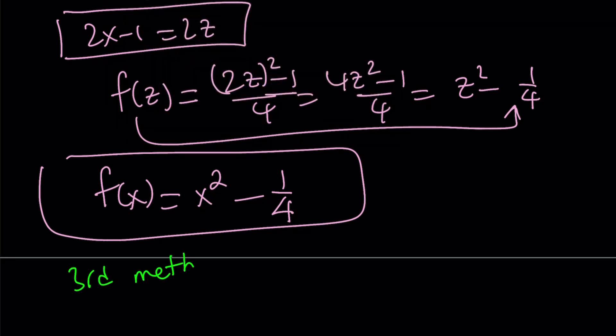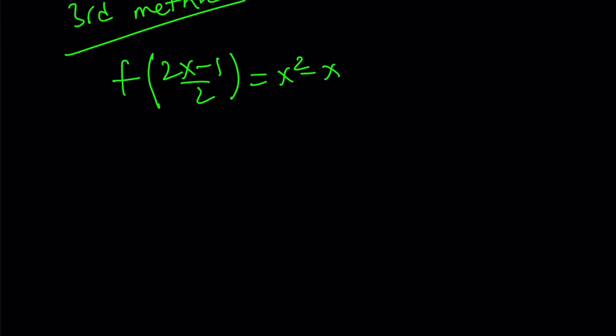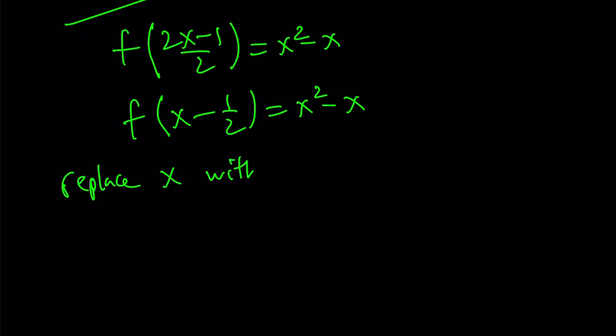Let's go ahead and talk about the third method, and now we're going to finalize this. Okay, for my third method, I'm going to do the following. I'm just going to go ahead and separate the top and write this as f of x minus 1 half equals x squared minus x. And instead of using a different variable like t or z, I'm going to use x again. And I want to replace x with x plus 1 half.